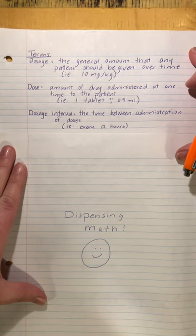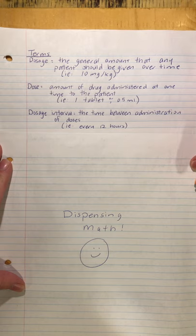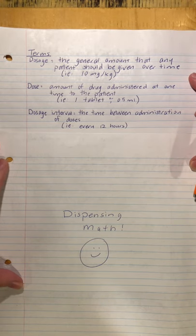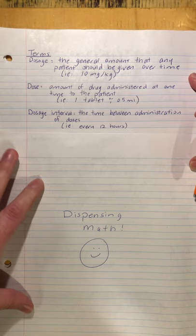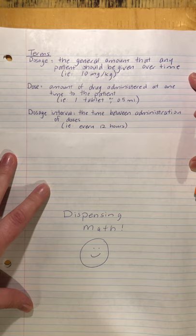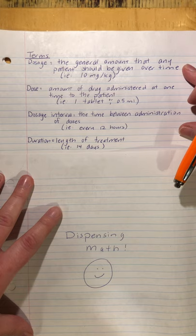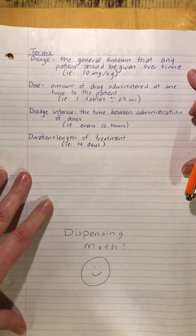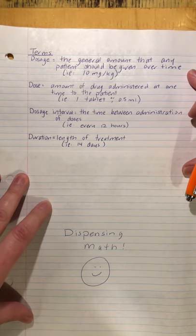Next we have the dosage interval. The dosage interval is the time between administration of doses. For example, giving medication every 12 hours, every 8 hours, or once every hour — that's the dosage interval.